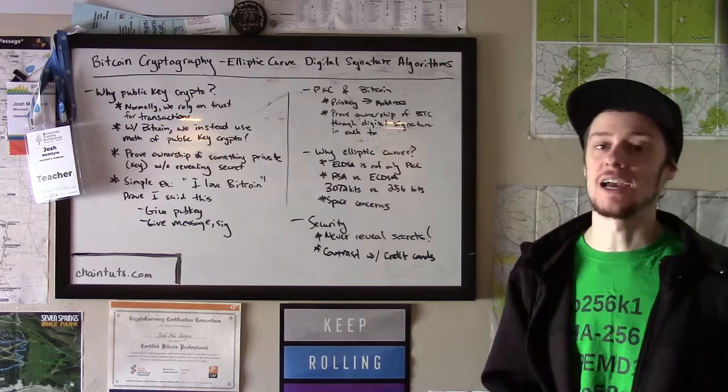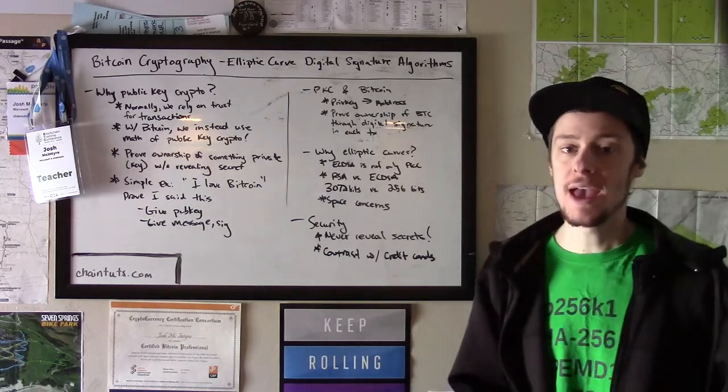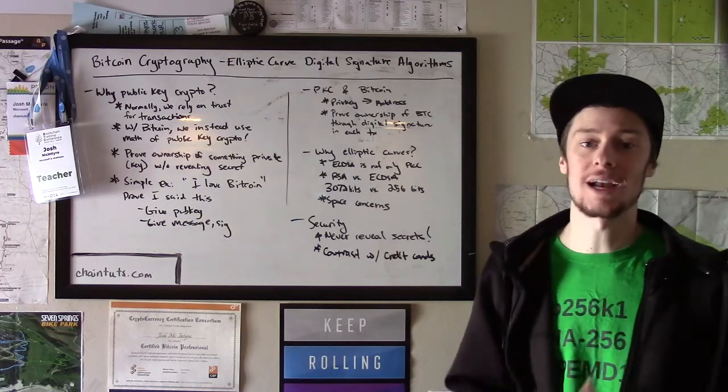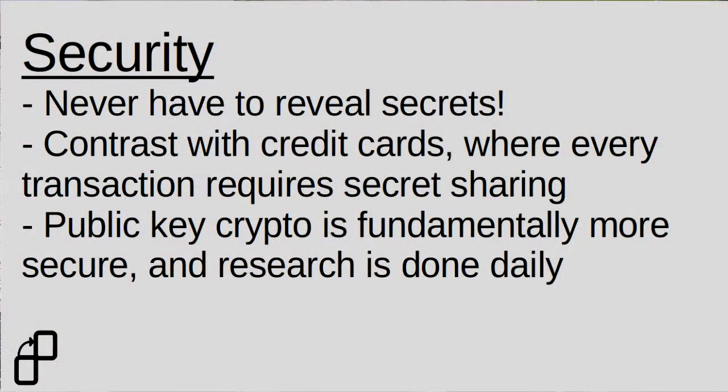Let's talk about the security of this kind of model more broadly. What's so advantageous about this type of system is that we never have to reveal secrets in order to transact with other people. We only ever have to reveal public information in the form of digital signatures. So when I create a Bitcoin transaction, all I'm doing is revealing my public key and signing a transaction at my address.